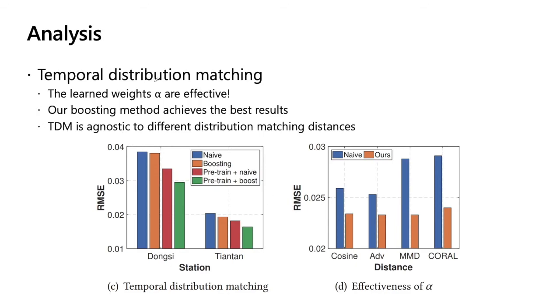And for temporal distribution matching, from this figure, we can see that the learned weights are far more effective, and our boosting method achieves the best results. Finally, our TDMA is agnostic to different distribution matching distances. For example, in this figure, we can see that if we use cosine distance, adversarial learning, or MMD, or CORAL, we can achieve remarkably similar performance, but all better than the existing state-of-the-art method.